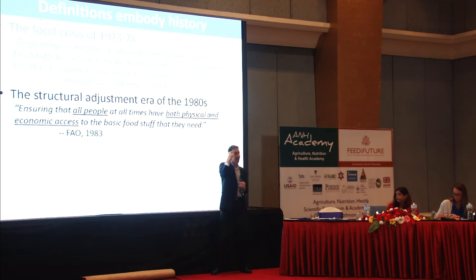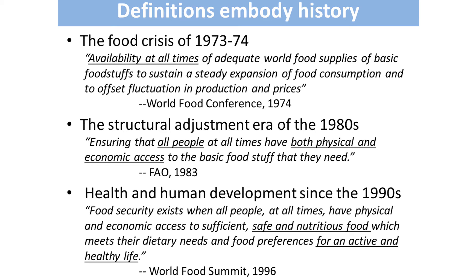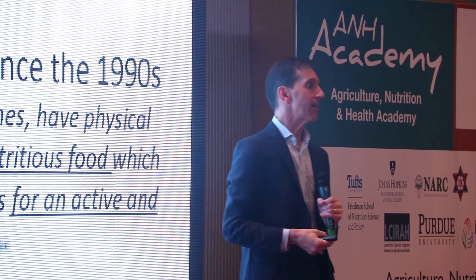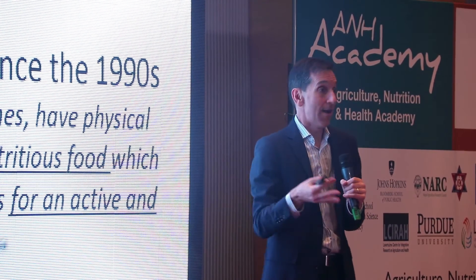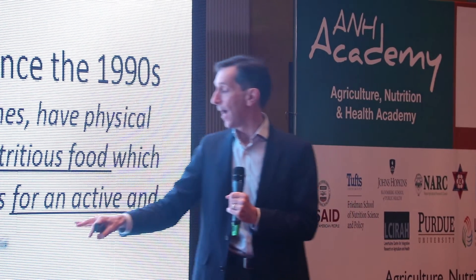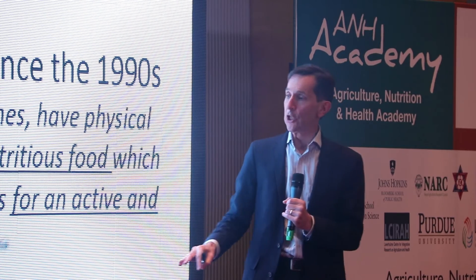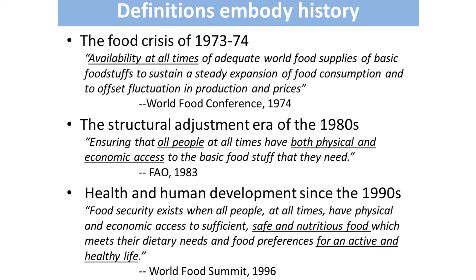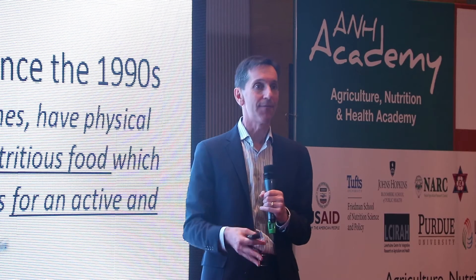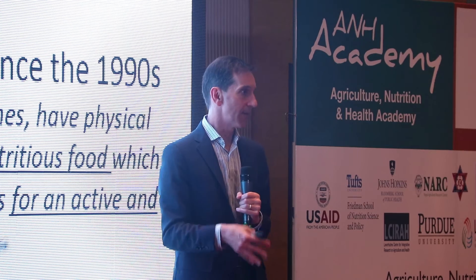Availability meant world food prices; access meant equity. Those words don't mean what people think they mean when you read them today with fresh eyes. Here's our modern era definition from 1996 — the World Food Summit that brought us the current definition. Food security exists when there's not just basic foodstuffs, but safe and nutritious food to meet food preferences: if you like chapati and dal, you should be able to have wheat; if you like rice and dal, you should be able to have rice. All these specific preferences should be respected, and it should be for an active and healthy life, not just subsistence.